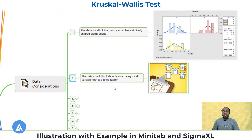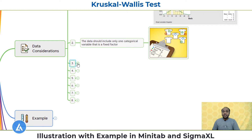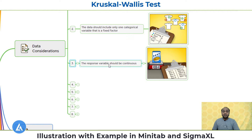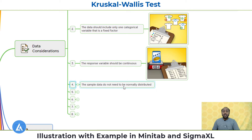The second data consideration is that the data should include only one categorical variable, and that is also a fixed factor. The third data consideration is that the response variable should be continuous. We need to use the Kruskal-Wallis test when we have only one categorical variable and the response variable must be continuous. The fourth data consideration is that the sample data does not need to be normally distributed, as this is a non-parametric test.